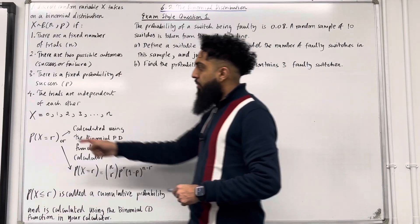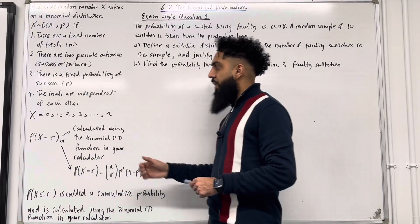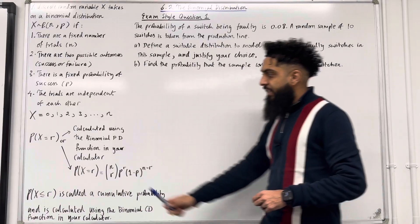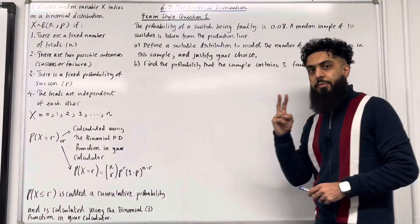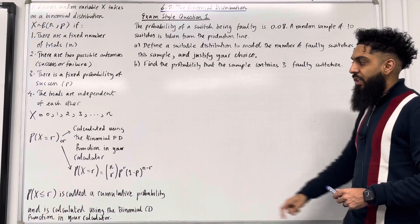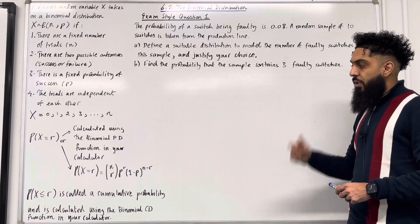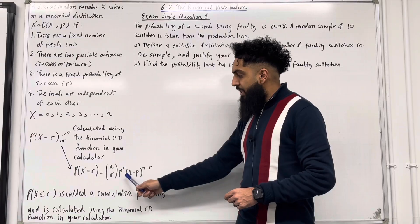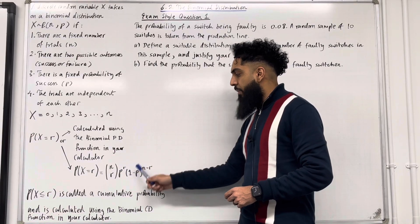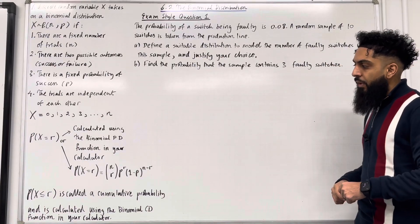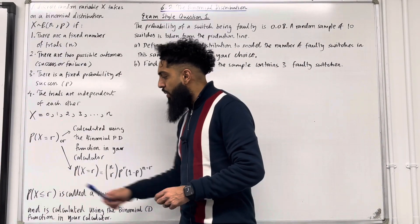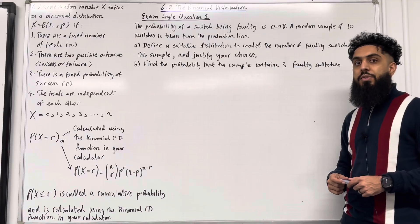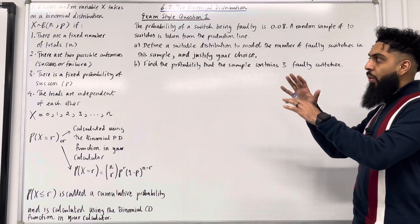The discrete random variable X takes on the values 0, 1, 2, 3 and so on up until N. The probability that X equals lowercase r can be calculated in two ways: using the binomial PD function in our Casio calculator, or using the formula N choose r multiplied by P to the power r multiplied by (1 minus P) to the power N minus r. The probability that X is less than or equal to r is called a cumulative probability, calculated using the binomial CD function in our Casio calculator.